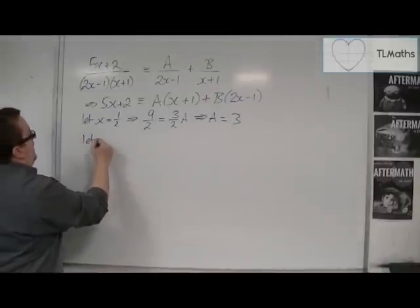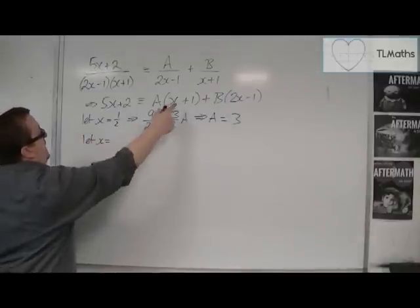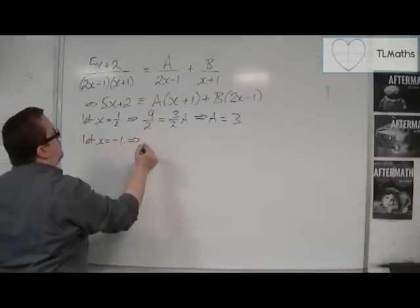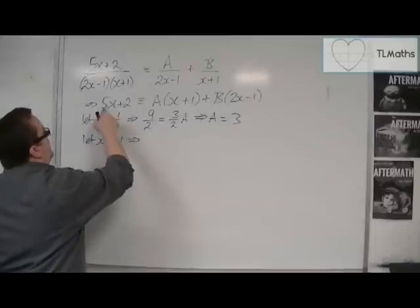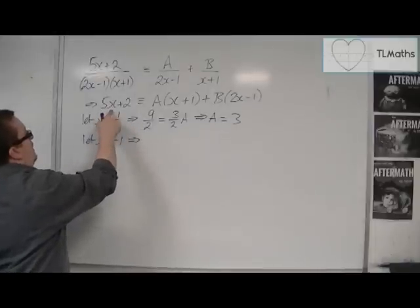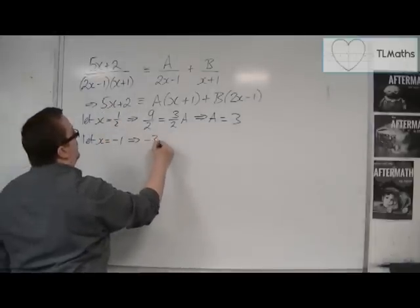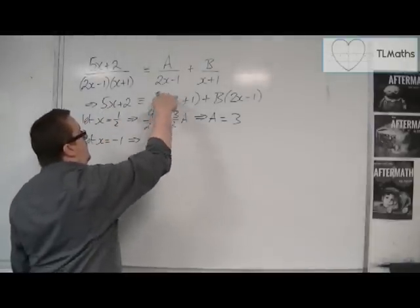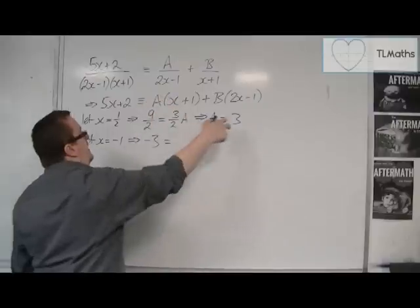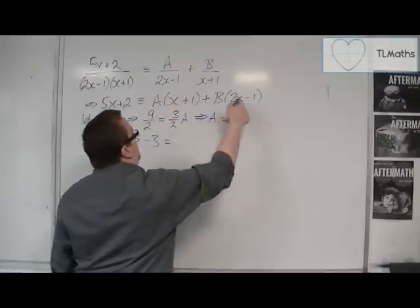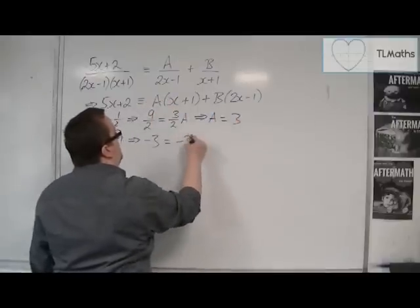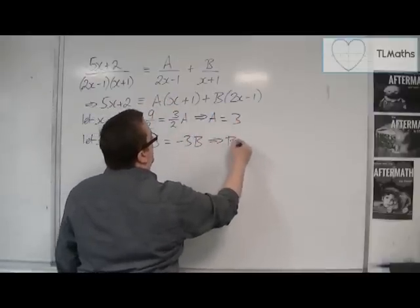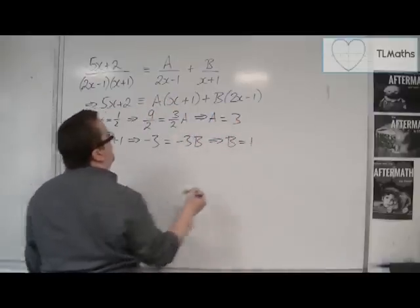And then let x be equal to minus 1 to knock out that bracket. So we get 5 lots of minus 1 plus 2, so minus 3. The minus 1 eliminates that bracket, and you've got minus 3B, and so B would have to be 1.